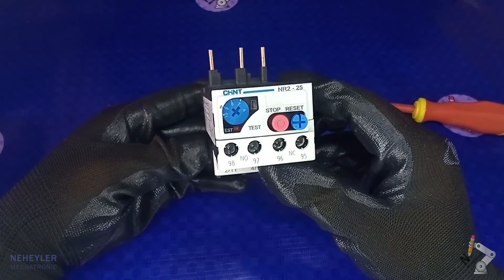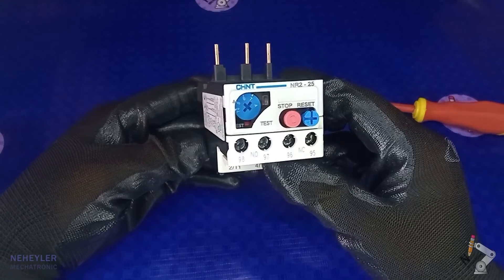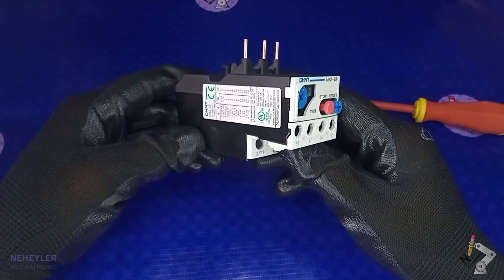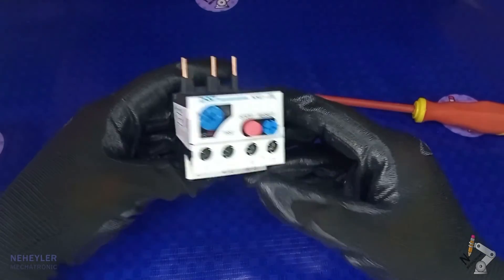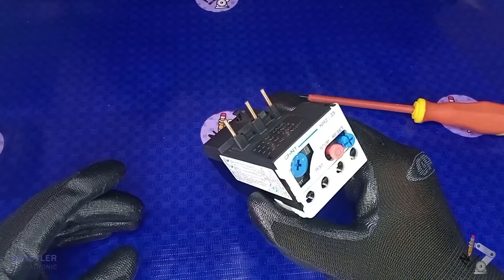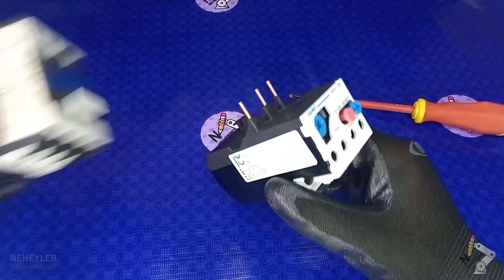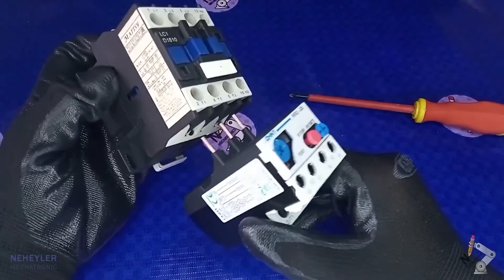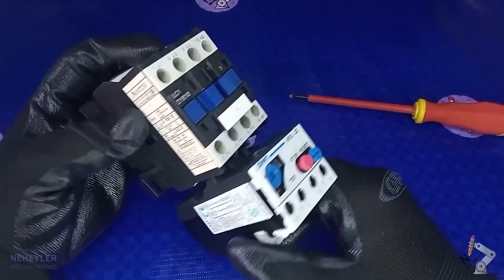The thermal relay is an electromechanical device that provides protection functions for single-phase and three-phase motors against possible overload or overheating in the motor winding. This device by itself does not have cutting power, so it needs another device, which is the contactor, which can cut the current between its main contacts.